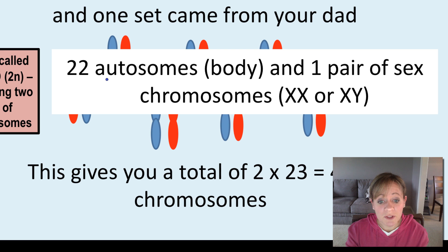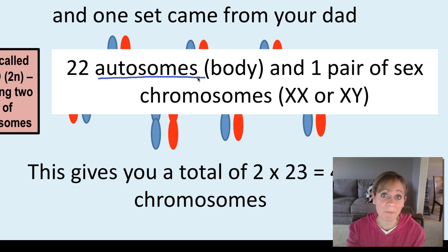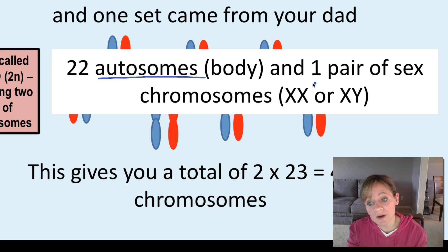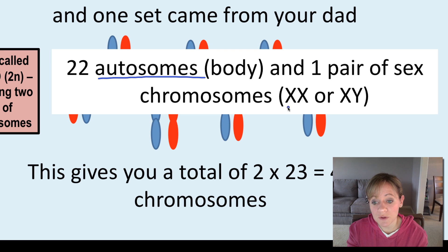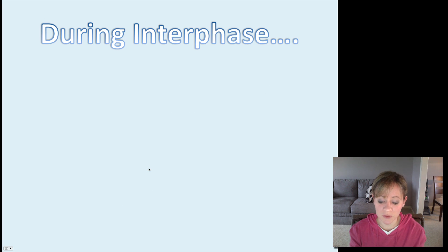Another term to be aware of is autosomes. Twenty-two pairs of those chromosomes are called autosomes, which are going to make up what makes your body. Then the last pair, the 23rd pair, those are sex chromosomes. If you're female, then you are XX, and if you're male, you're XY. So 22 pairs are autosomes and one pair are sex chromosomes.